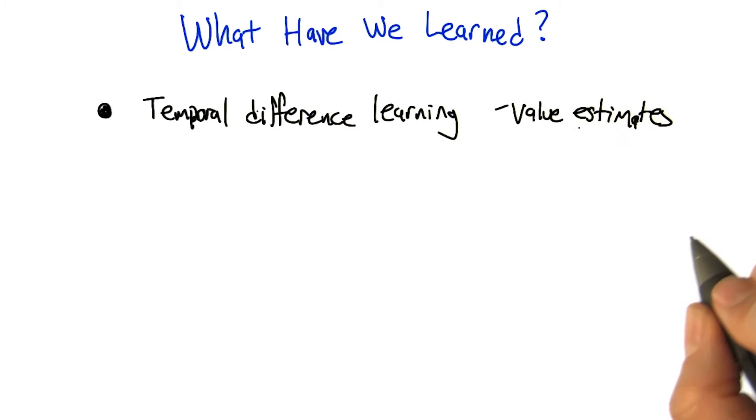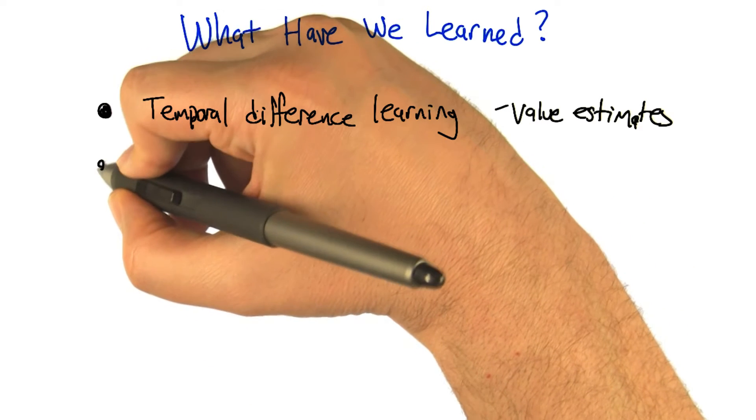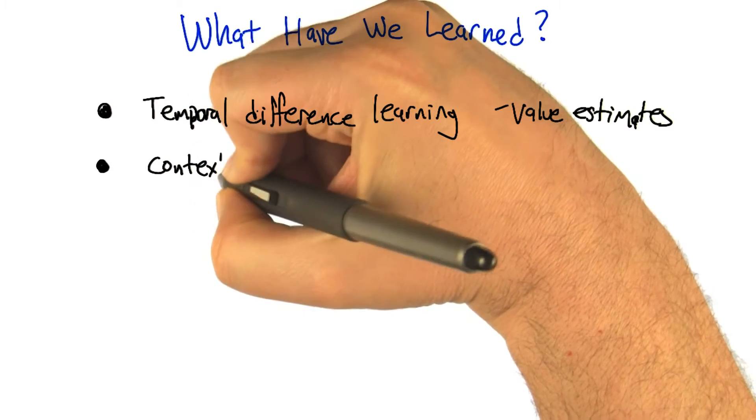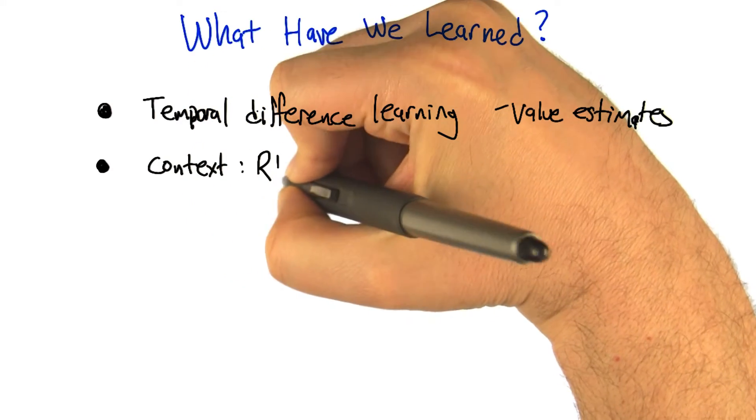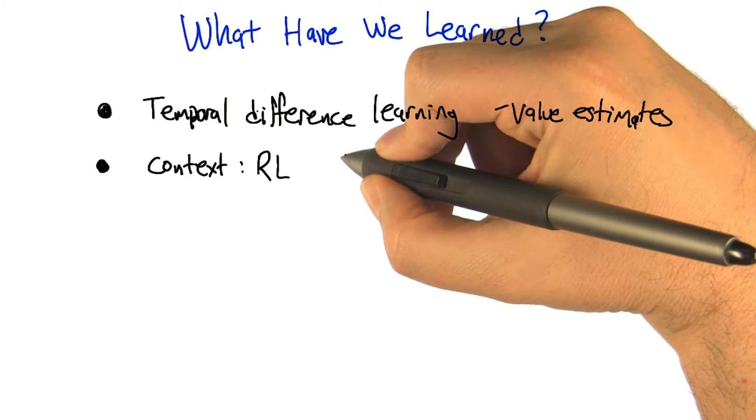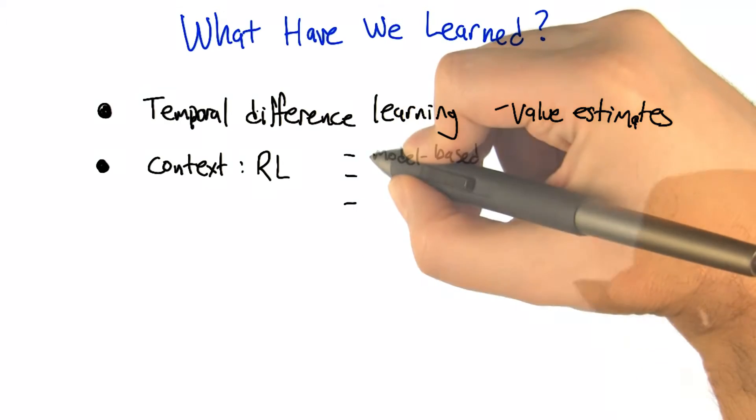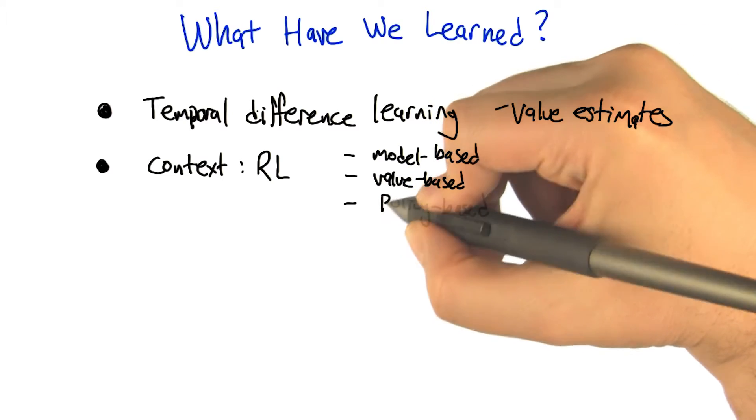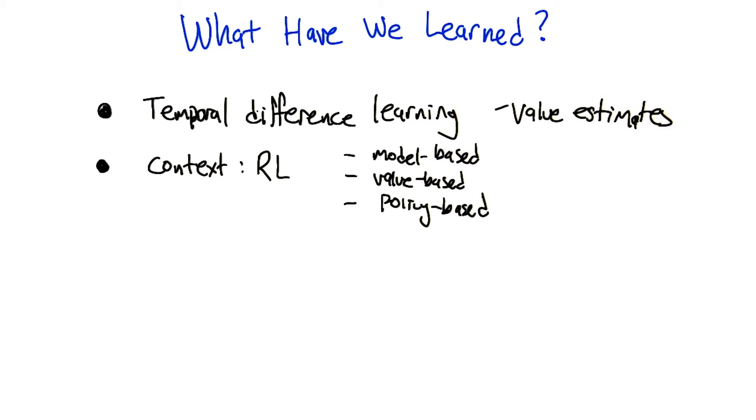Good, all right. But actually, I think it was important that you started off by putting it in context, talking about different ways that we could solve the reinforcement learning problem. And as I recall, there were sort of three ways to think about it: model-based learning, value-based learning, and policy-based learning. That's right, and TD methods kind of fall where? Value-based.